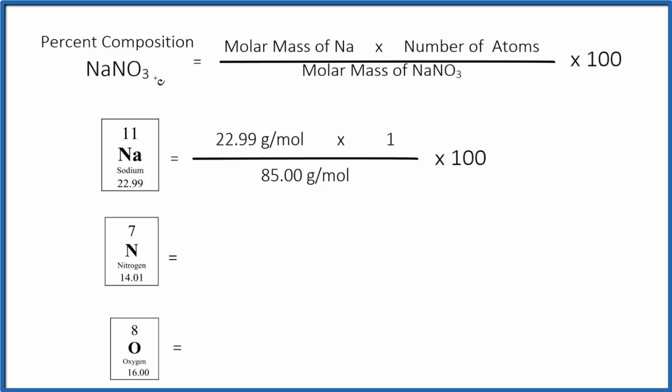To find the percent composition by mass for the sodium here in sodium nitrate, we take the molar mass of sodium, or the atomic mass, we put that in, then we find the number of sodium atoms—we only have one.